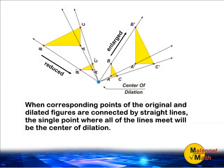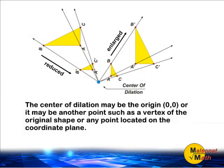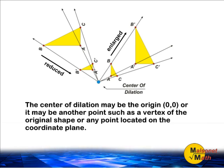When corresponding points of the original and dilated figures are connected by straight lines, the single point where all of the lines meet will be the center of dilation. The center of dilation may be the origin, or it may be another point such as a vertex of the original shape or any other point located on the coordinate plane.